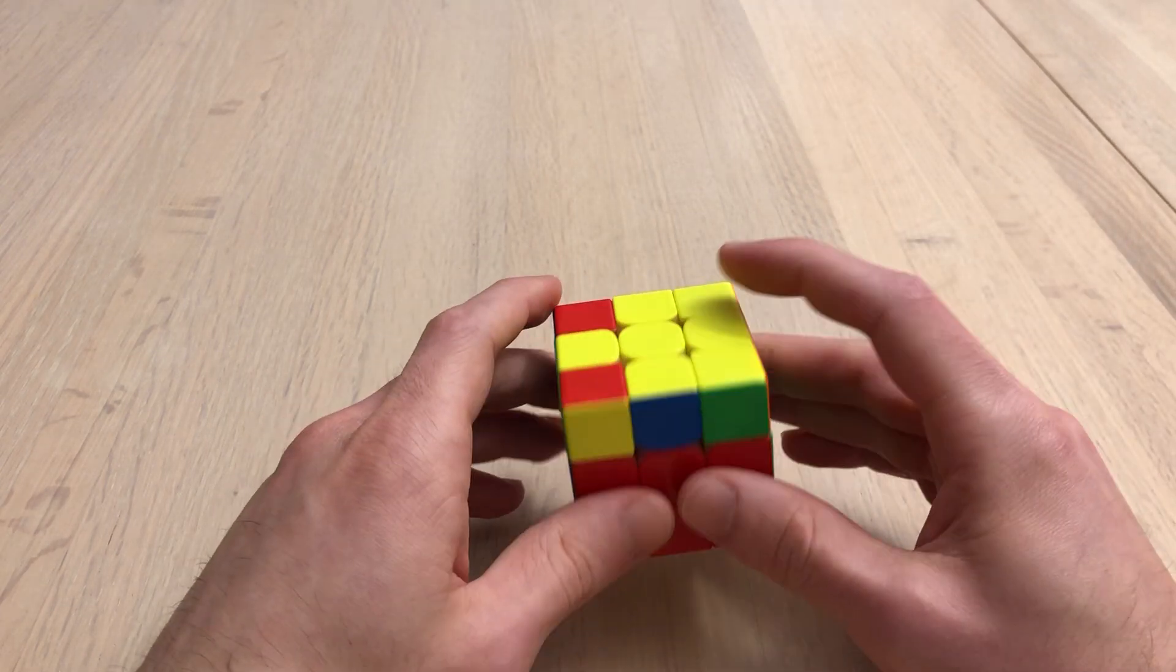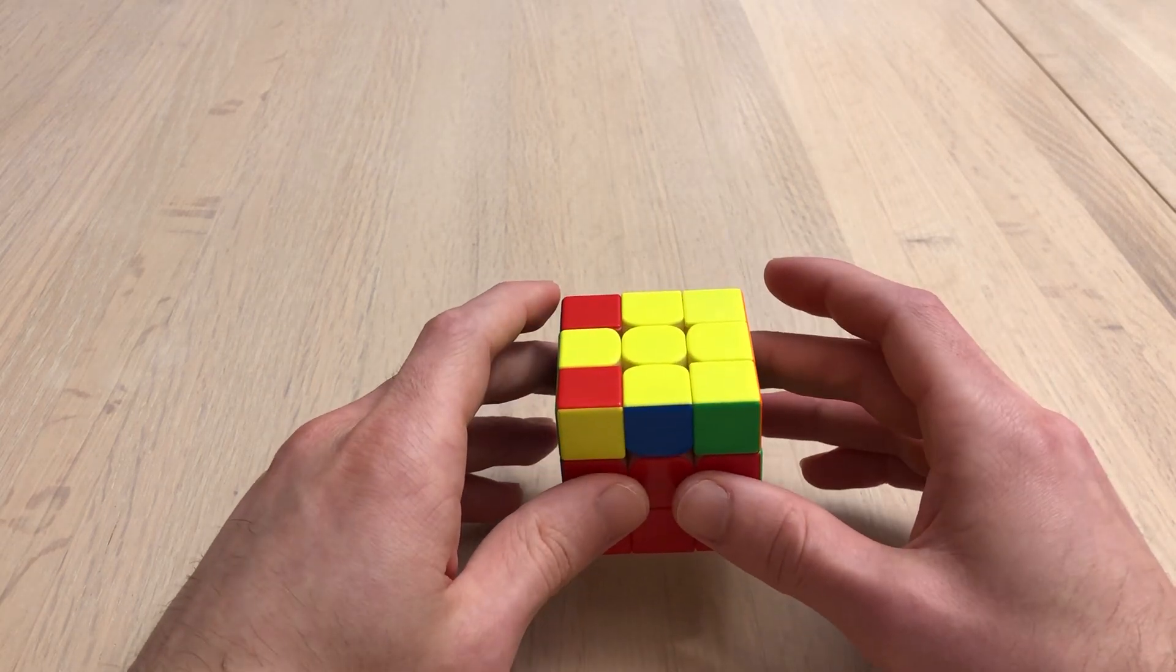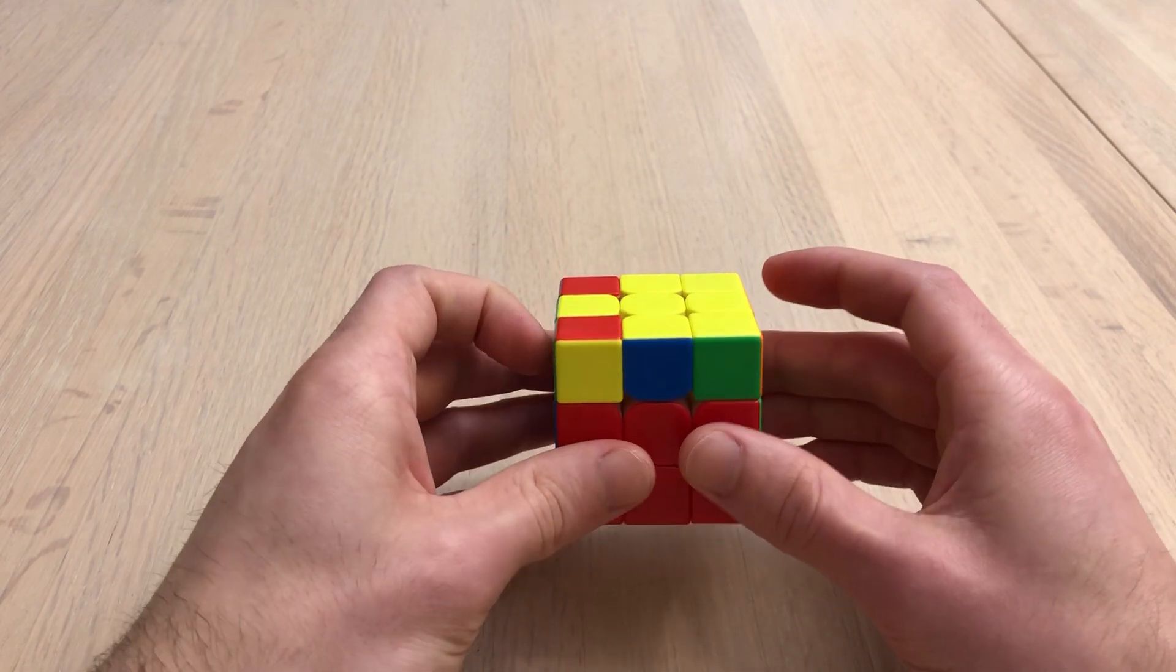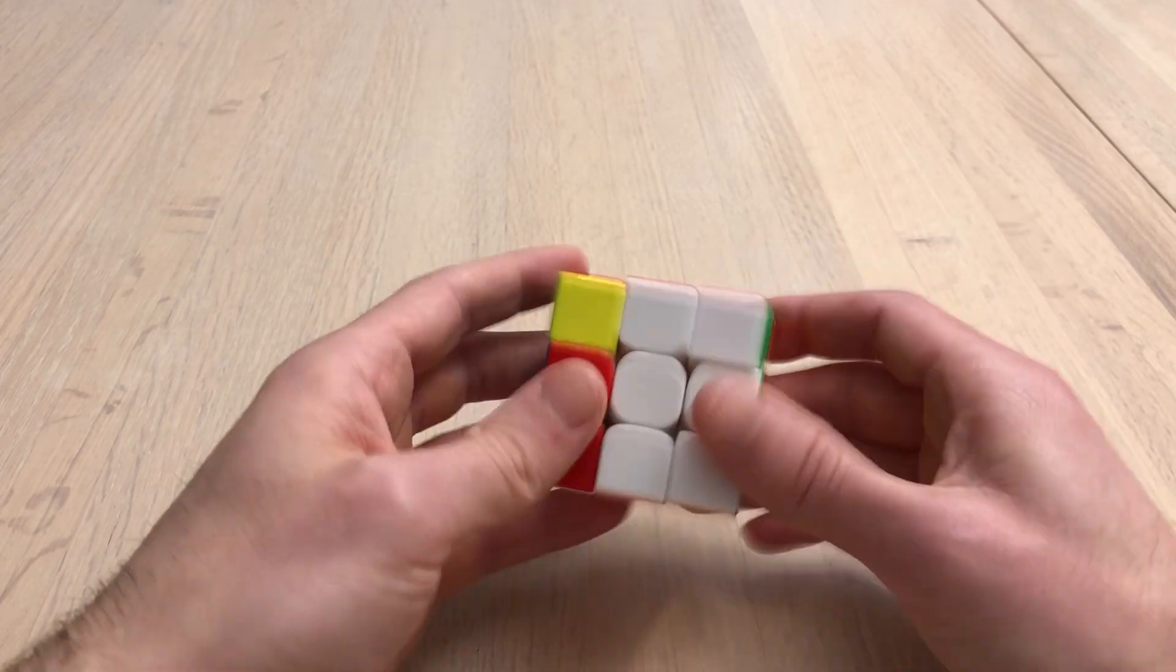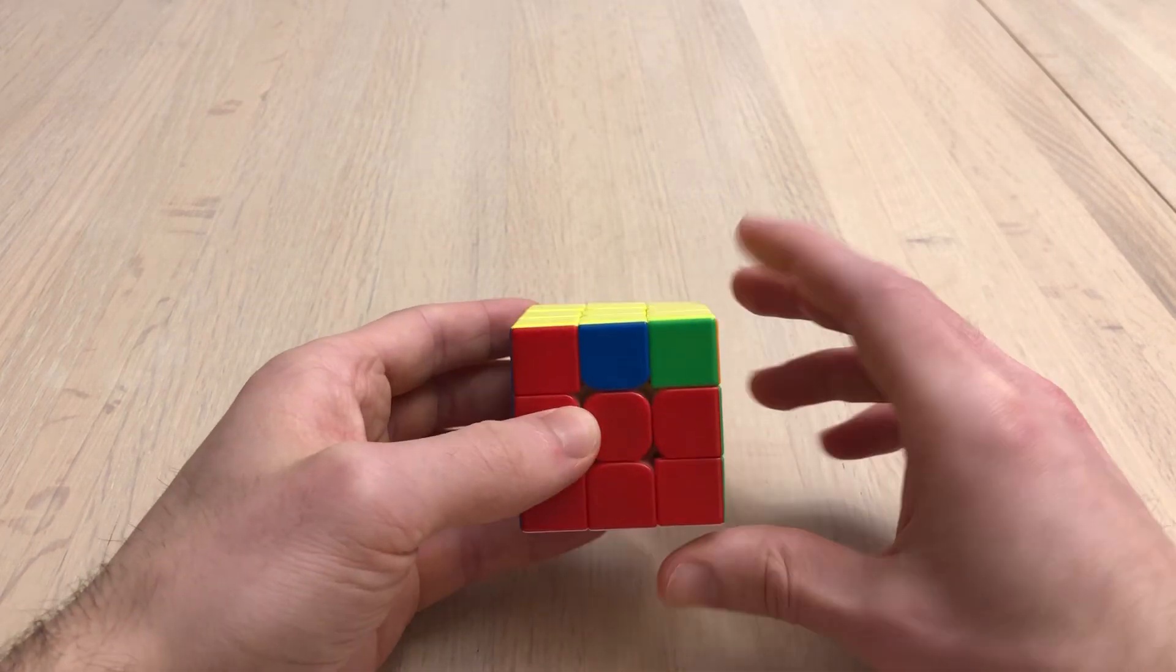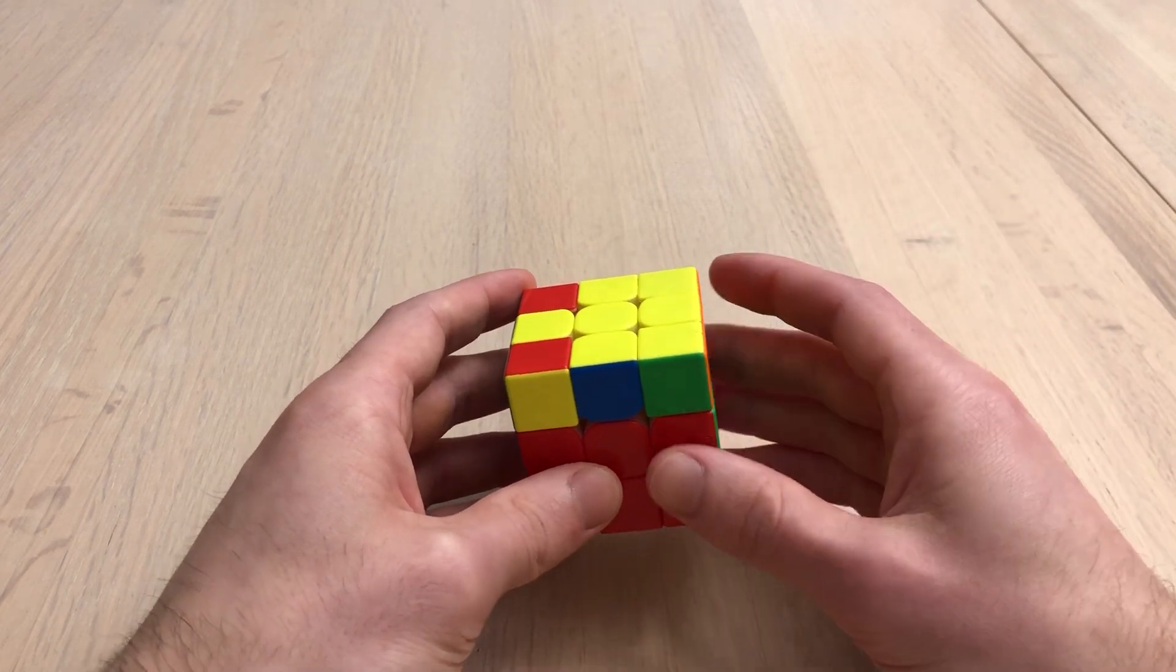So for this case right here, this is a ZBLL I know. But if I were to get this in a solve, I would know instantly I could just do OLL and then G-perm. Good angle. That'd be a pretty quick solve to do that OLL PLL.